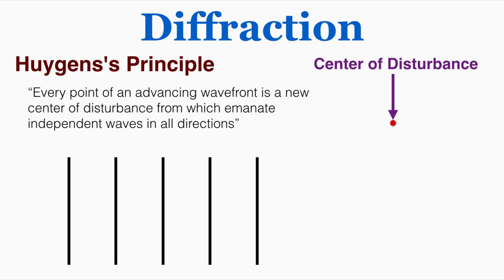An example would be if you throw a stone into a pond — the place where the stone enters the water is a center of disturbance and waves spread out in all directions from that one point of disturbance. So if this red dot is a center of disturbance, waves are going to radiate out in all directions like this.